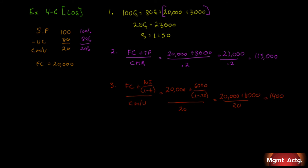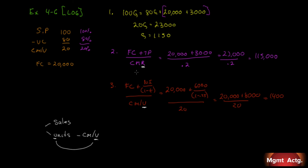When doing these problems, make sure you understand whether you're being asked for breakeven or target profit in sales dollars or in units. If asked in units, use the contribution margin per unit. If asked in sales dollars, use the contribution margin ratio. A simple trick: units has a 'U' in it — contribution margin per unit. Everything else uses the contribution margin ratio.